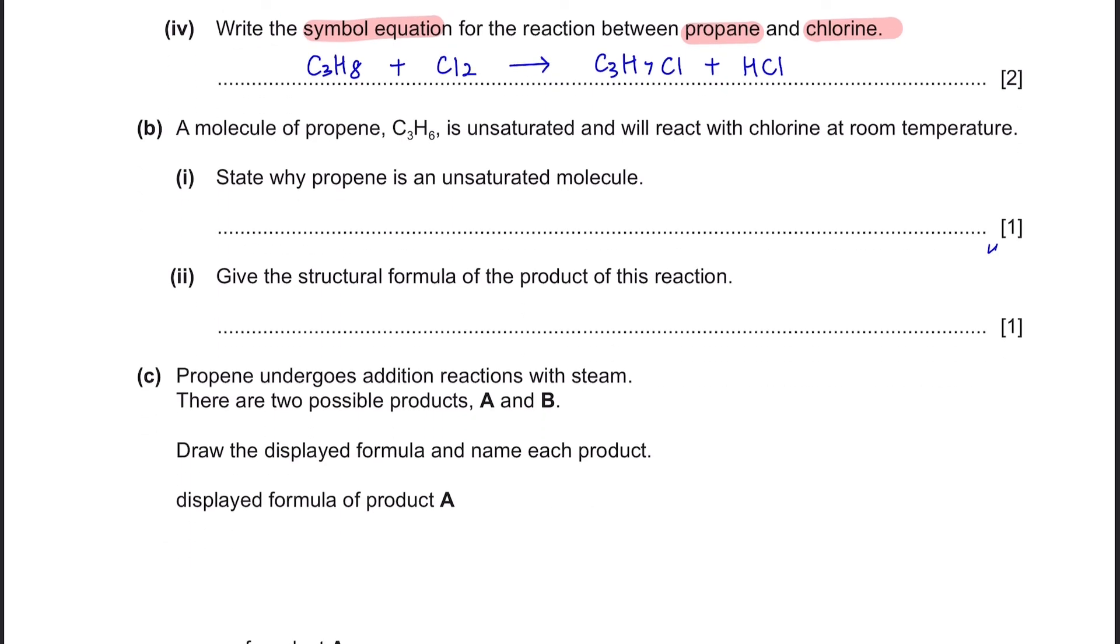Question B: A molecule of propene C3H6 is unsaturated and will react with chlorine at room temperature. Part 1: State why propene is an unsaturated molecule. Make sure you're familiar with the term saturated and unsaturated. All alkane compounds are saturated whereas alkenes are classified as unsaturated because they contain double bond of carbon, whereas alkane only have single bonds of carbon.